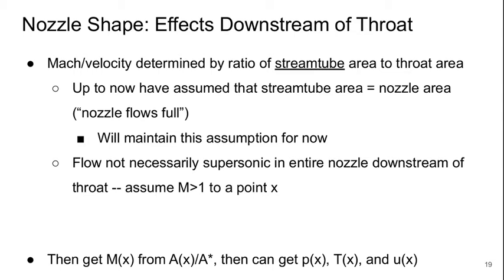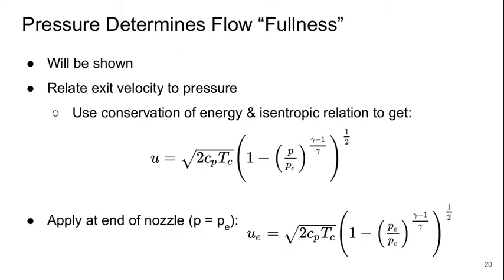Physically what's happening there is, if essentially the back pressure is too high, the flow will basically go through a shock wave, or a series of shock waves, to slow down to subsonic conditions. And so you'll get a rapid transition from supersonic to subsonic flow in the nozzle. And really, it's going to be the pressures that determine, essentially, whether the nozzle is going to flow fully or not. And we'll show this a little bit later today.